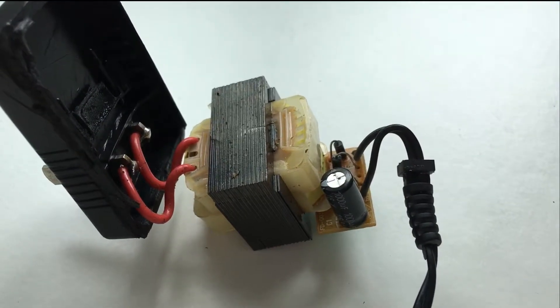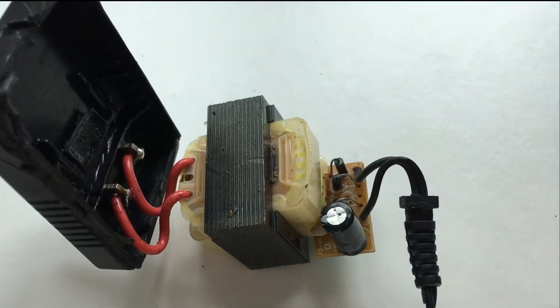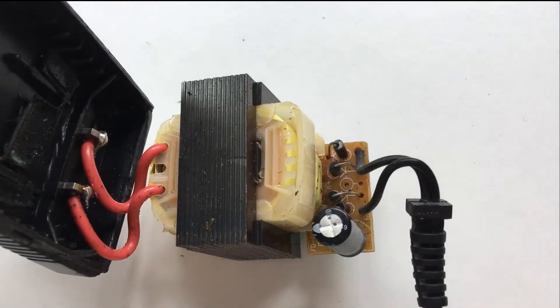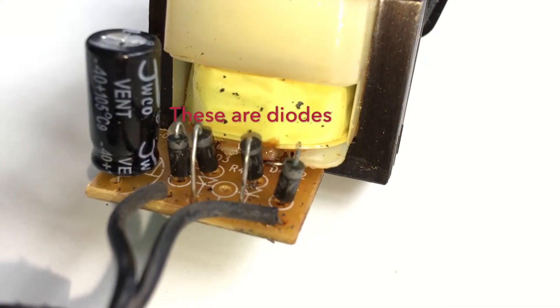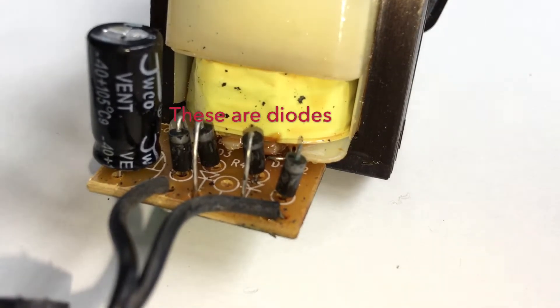So the high voltage is fed through the red wires to the primary coil of the transformer and the secondary coil of the transformer is fed to 4 diodes to rectify the alternating current into direct current.